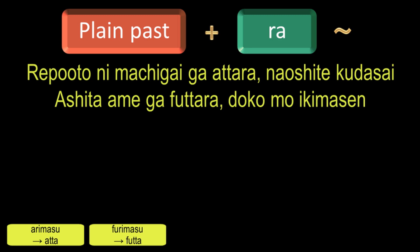The verb Agarimasu means to rise or go up. Its past tense is Agarimashita and the plain past form is Agatta. By adding Ra, we will get the condition Agattara, which means if something rises.